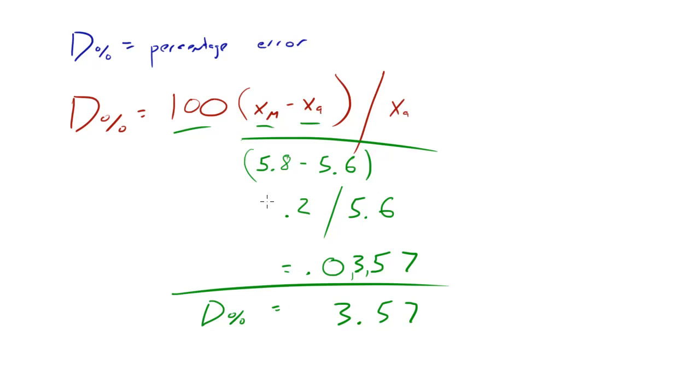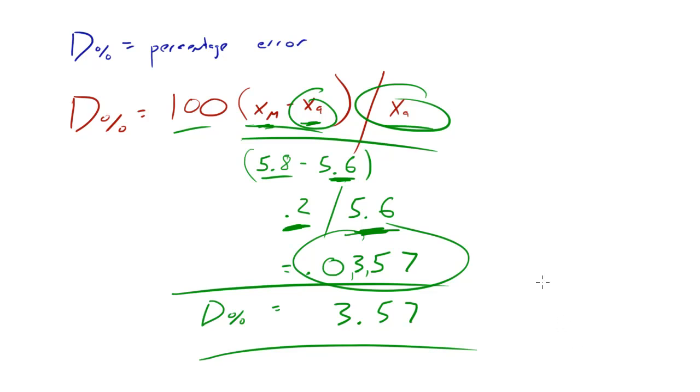So 3.57 is our percentage error. Pretty cool, huh? So basically one last time, we take the measured value which is 5.8 and subtract the actual value which is 5.6 and we get this number, in this case it was 0.2, and we take that and divide it by the actual value which was 5.6 again. This number and this number are the same, and then all we need to do is once we have our value times it by 100 and bam there we go. Our percentage error, perfect, and hopefully this number is as small as possible.